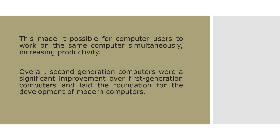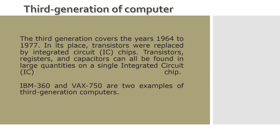With second generation computers established, people thought that technology could be advanced further, leading to the third generation of computers. The third generation covers the years 1964 to 1977. In this generation, transistors were replaced by integrated circuit chips — IC chips. Transistors, registers, and capacitors can all be found in large quantities on a single integrated circuit chip.